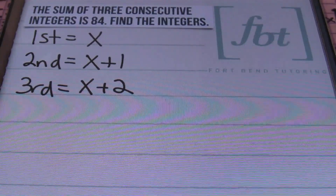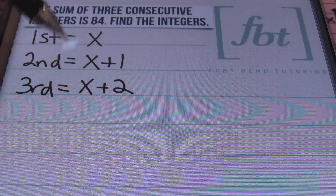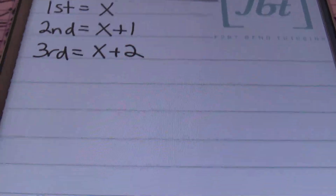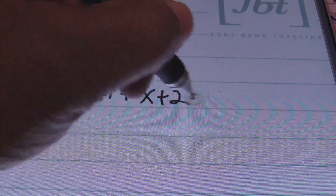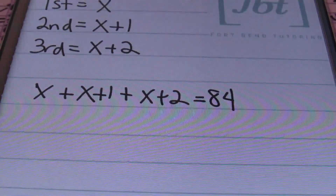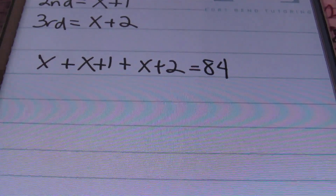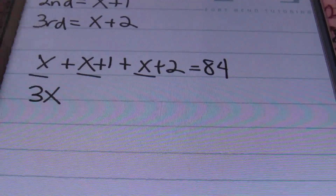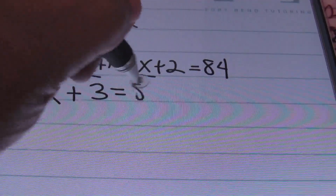We were told that the sum of these three consecutive integers is 84, which means we need to add these three values together and have it equal to 84. Here's our equation: x plus x plus one, which is the second value, plus x plus two, all equal to 84. From there, I'm going to combine my like terms and solve for the variable. I have three x's, so adding those together I have 3x. Combining one plus two gives a positive three, so 3x plus 3 equals 84.